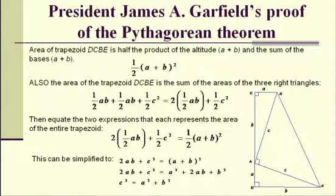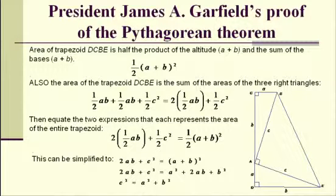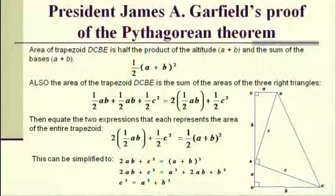You can also take the area of that trapezoid and break it up into component parts. By doing that, you get two right triangles whose legs are A and B, so those two triangles have an area of one-half AB each. Then the right triangle that's tilted obliquely has legs of length C, and its area is one-half C squared. The sum of all these parts, doing a little very simple algebra, is two times one-half AB plus one-half C squared.